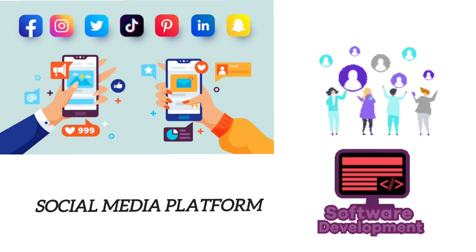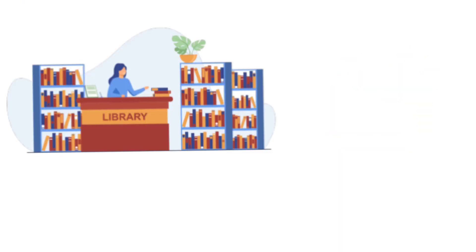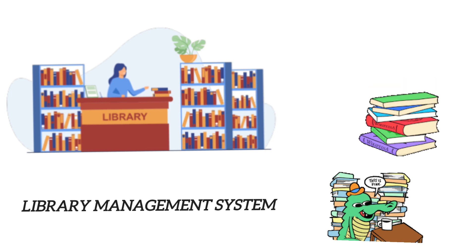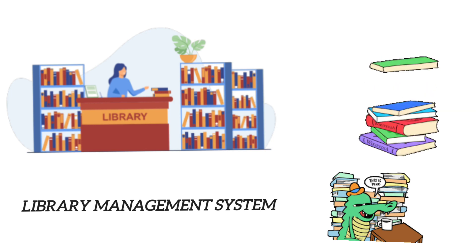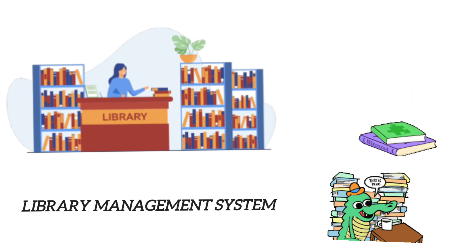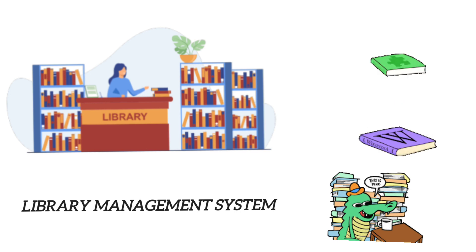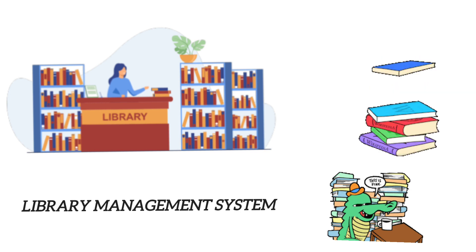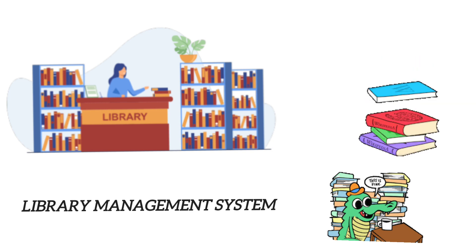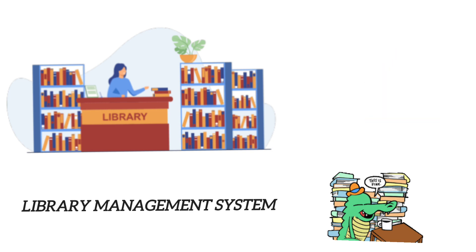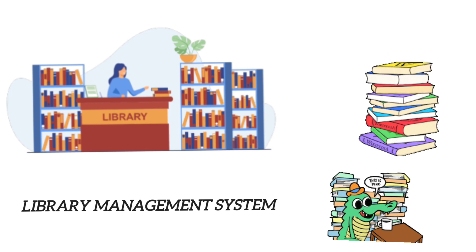5. Library Management System. A library management system is a classic Java project. Students can design a system that allows librarians to catalog books, manage memberships, check in and check out books, and generate reports. This project can also include features like online reservations and late fee calculations.